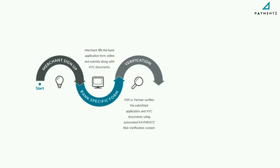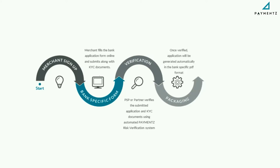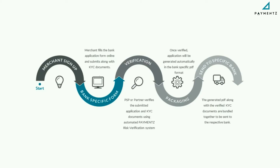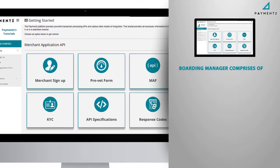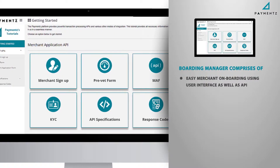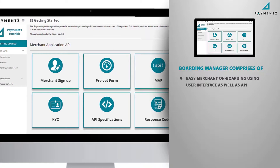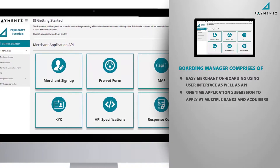The PSP or partner verifies the submitted application and KYC documents using an automated payments risk verification system. Once verified, the application will be generated automatically in the bank-specific PDF format, and the generated PDF along with the verified KYC documents are bundled together to be sent to the respective bank.